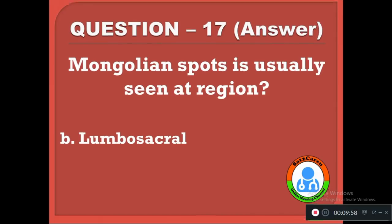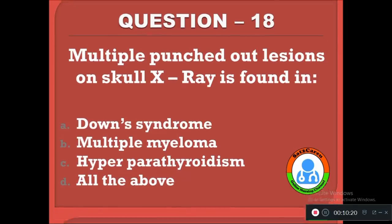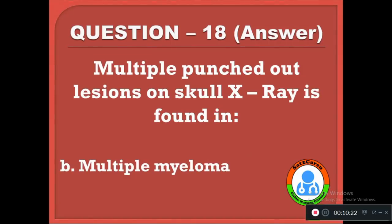Question 18: Multiple punched-out lesions on skull X-ray are found in — option A: Down syndrome, B: multiple myeloma, C: hyperparathyroidism, D: all of the above. The correct answer is B, multiple myeloma.